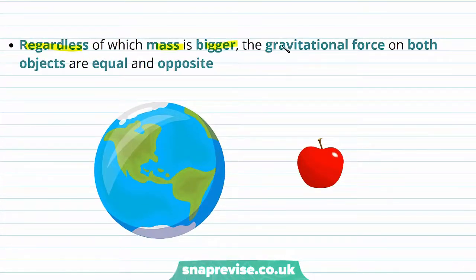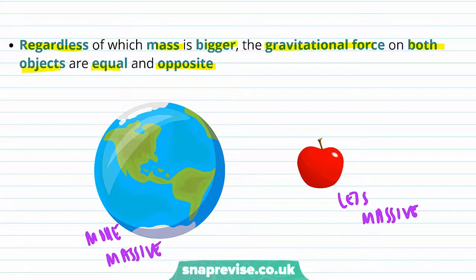Regardless of which mass is bigger, the gravitational force on both objects are equal and opposite. So even though the Earth is more massive than the apple, there is an equal gravitational force between them.